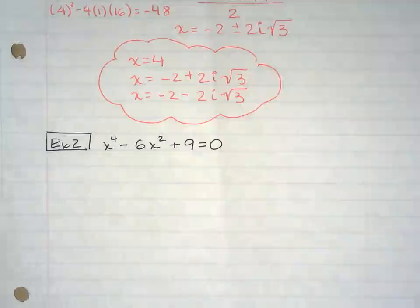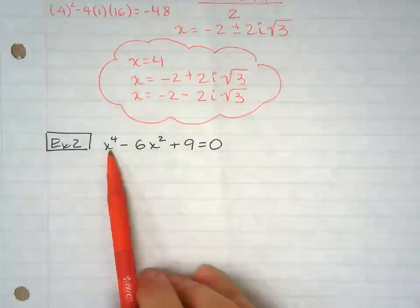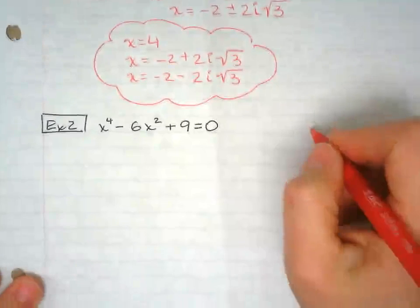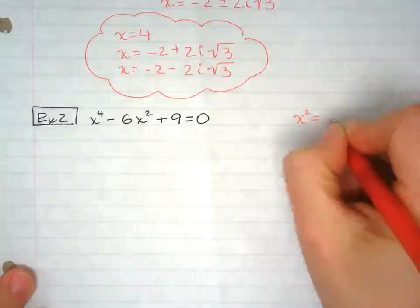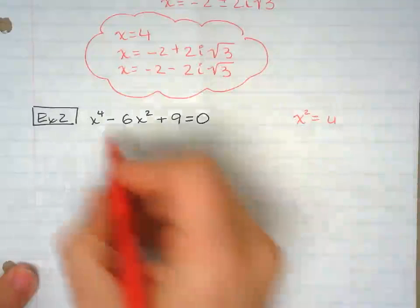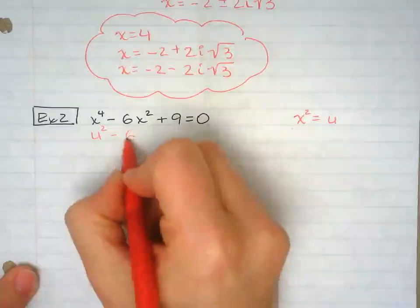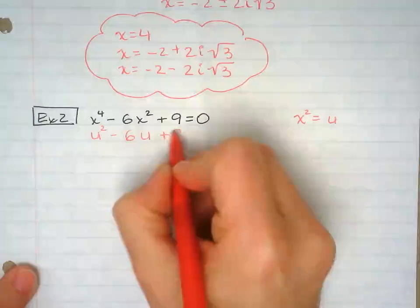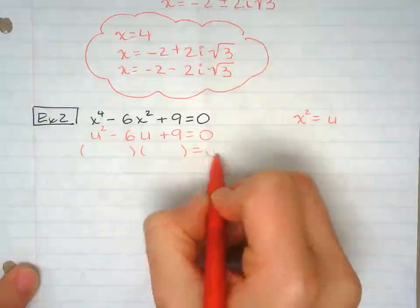Now this one, you're probably thinking, how am I going to deal with that exponent 4? Remember when we used x squared to substitute, u to substitute for x squared, and that's what we're going to do here. So u squared minus 6u plus 9.